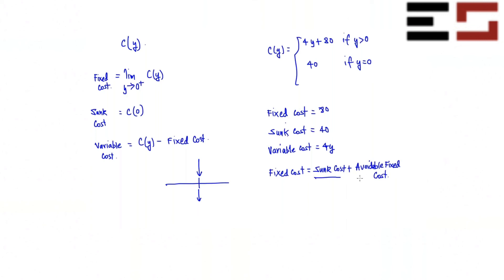So all that has already been incurred, so that's basically your sunk cost. And this is something that we can still avoid by choosing to produce nothing. But if you want to produce even epsilon amount of output you have to incur this as well. So you have to incur the starting cost.